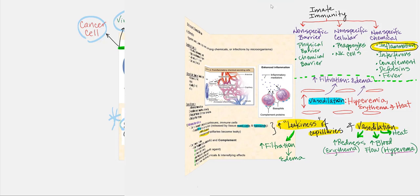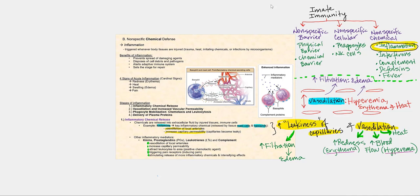Now that we've finished nonspecific cellular phagocytes and natural killer cells, let's look at nonspecific chemical defenses, beginning with inflammation. Whenever body tissues are injured — due to trauma, heat, irritating chemicals, or infections — it will trigger an inflammatory response.